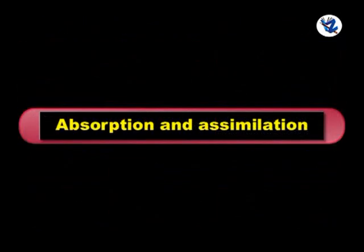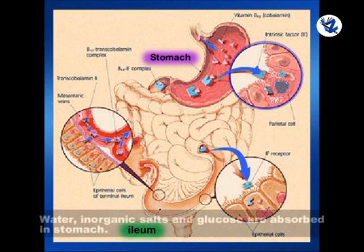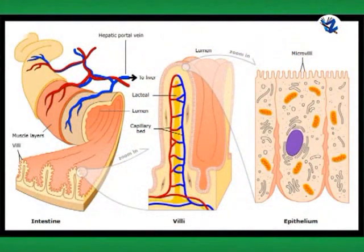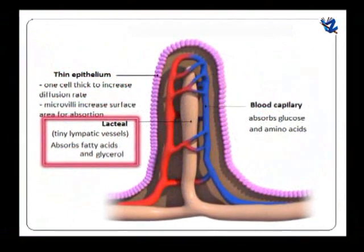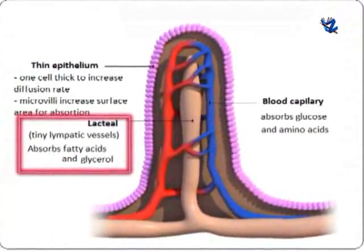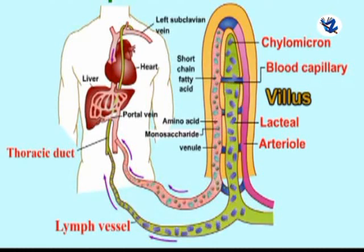Now absorption and assimilation — the digested forms of food diffuse into the inner lining of the digestive tract; this is called absorption. Water, inorganic salts and glucose are absorbed in the stomach. Amino acids, glucose and fructose are absorbed into blood capillaries by the process of osmosis, diffusion and active absorption. Fatty acids and glycerol are absorbed in lacteals or lymph vessels, which later open into blood vessels. When the absorbed food components become part of the protoplasm, it is called assimilation. The assimilated food material is used to form ATP by oxidation in the mitochondria.